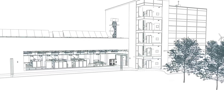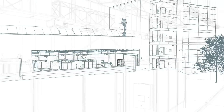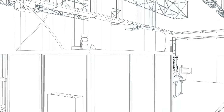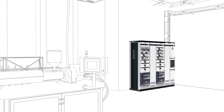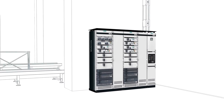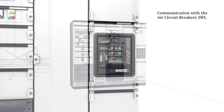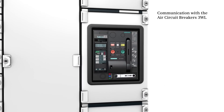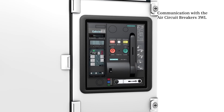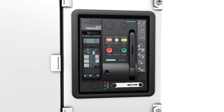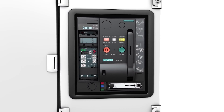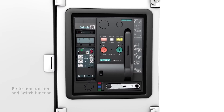Do you want to guarantee the power supply to your plant and identify potential savings? 3WL air circuit breakers provide the security and transparency your energy distribution requires.